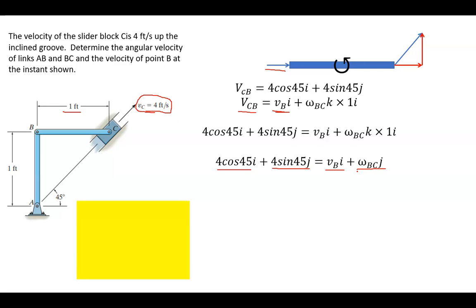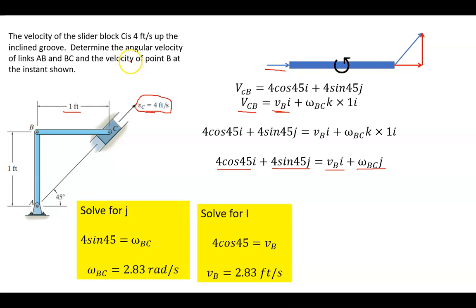So first we're going to look at the J components. So four feet per second times the sine of 45. So this is the vertical component. That is equal to the angular velocity of rod BC. And that just comes out to 2.83 radians per second.